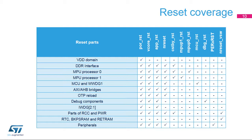The system reset (NReset) resets most logic in the VDD core domain, except some resources in the RCC, PWR, debug components, IWDG2 and IWDG1; the backup and VSW domains are not affected. The backup domain reset (NReset_VSW) resets all components in the backup and VSW domains, which contain the RTC, the external low-speed oscillator, the backup RAM, and the retention RAM.